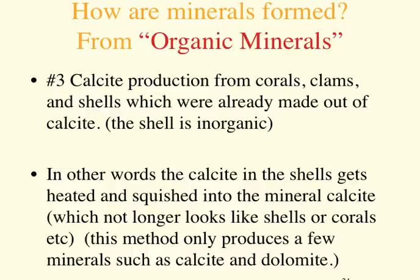The shell kind of gets crushed up and made into a mineral called calcite, and it no longer looks like a shell or a coral. Another very common organic mineral is dolomite — there's a lot of dolomite in the Dolomite Mountains of the Alps, which I believe are in Italy.